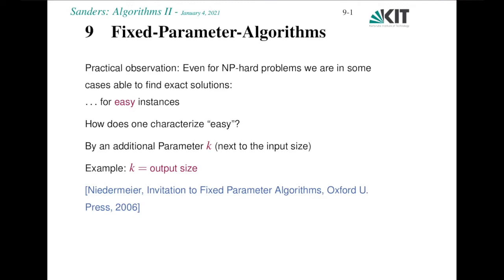A practical observation is that even for NP-hard problems, we are in some cases able to find exact solutions if the instances are somehow easy. How does one characterize easy? A formal way to do that is to consider an additional parameter k next to the input size parameter that we are always using.